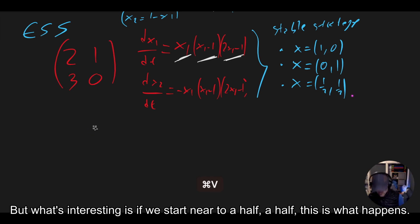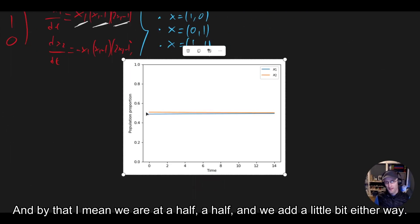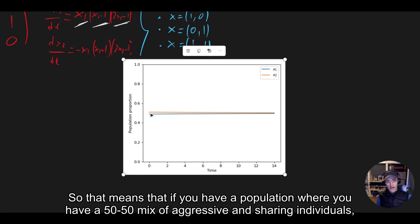But what's interesting is if we start near to a half a half, this is what happens. So we're starting near to a half a half, and by that I mean we are at a half a half, and we add a little bit either way. And what happens here is that the population snaps back.